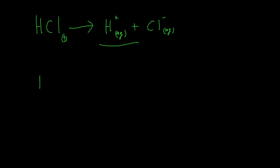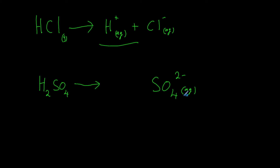Another example is sulfuric acid, H₂SO₄, which in solution forms sulfate ions SO₄²⁻ and two lots of H⁺. The reason we don't write 2H⁺ as a molecule is because those two H⁺ ions are separate from each other. This process is known as dissociation — when an acid dissociates into its ions — and the H⁺ confirms that this is an acid.